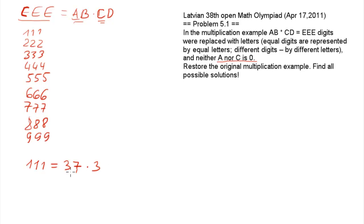So any of these nine numbers, if you express them as this product, either AB or CD should be divisible by 37. And there are only two two-digit numbers divisible by 37: 37 itself and also 74.